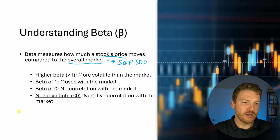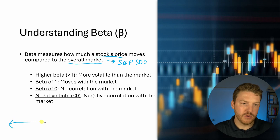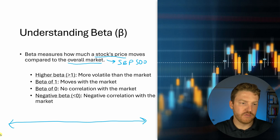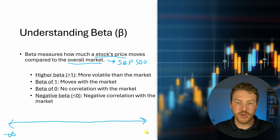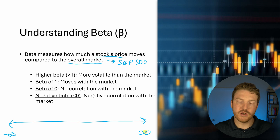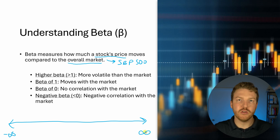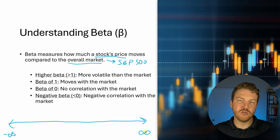Now beta is really on a spectrum where it can go basically from negative infinity all the way up to positive infinity. But in this video we're really going to be looking at four specific cases or examples.